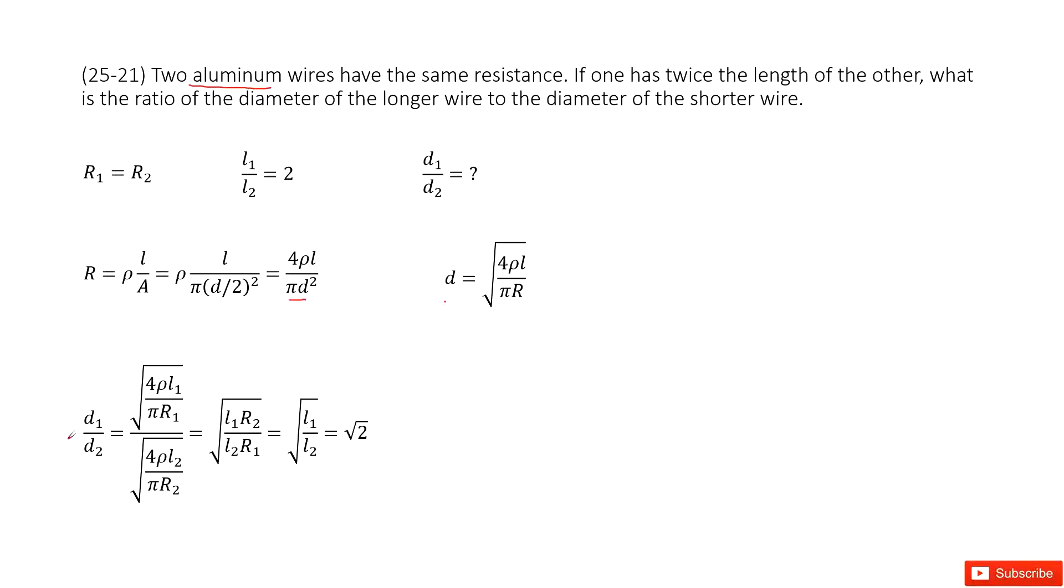Now we look at the ratio D1 over D2. We replace D1 with this term involving L1 over R1. Similarly for D2. The 4 rho terms cancel, the π terms cancel. We can simplify the expression to this form.